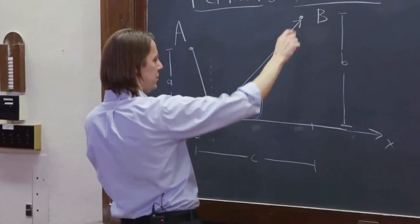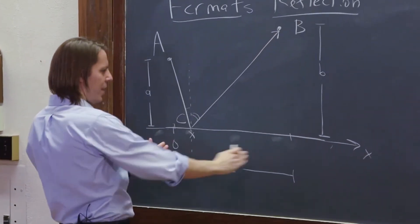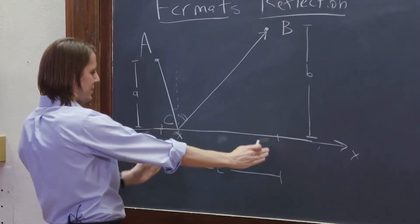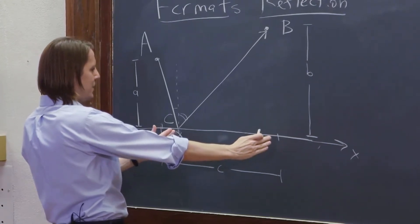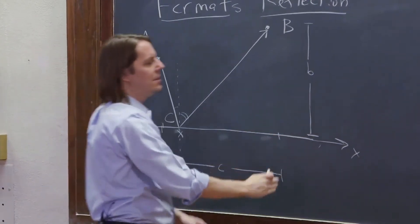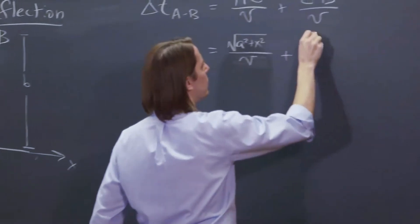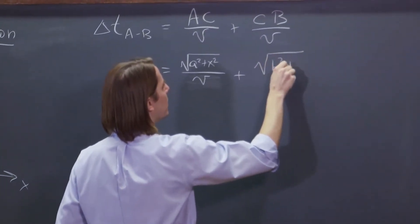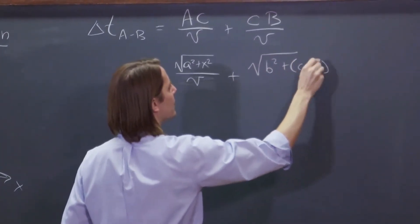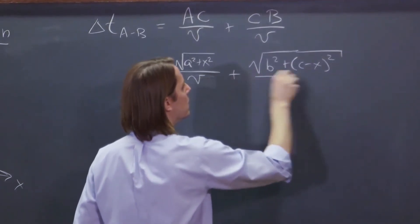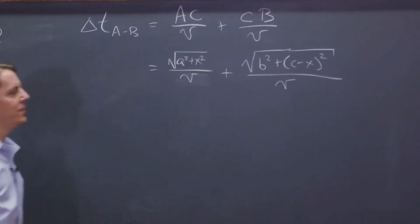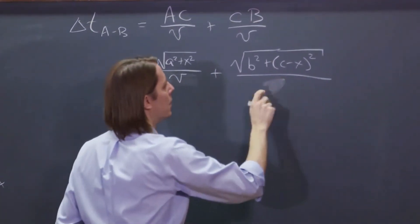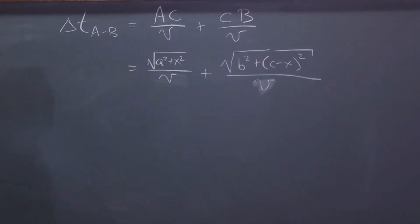And here is another right triangle between what's left of C. So we brought it over X, and the whole distance was C, so that would be C minus X on one axis, and B on the other axis. So the square root of B squared plus C minus X squared over V. There we go. So that's the time.